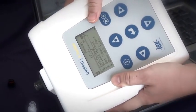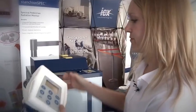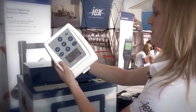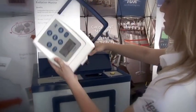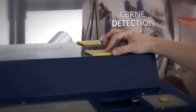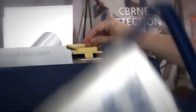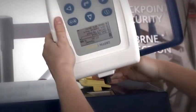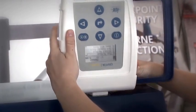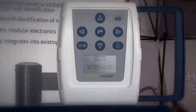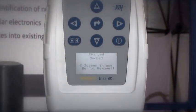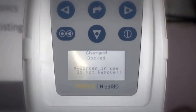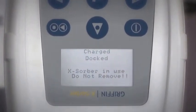Now we're going to take the Xorber over to the mobile GC MS and analyze the sample. To do that, you open the handle, open up the sampling port on the Griffin 450, and insert it. There's a triangle here, so you line up the shape with the display facing you. You can see it says charging docked. While you're working with the instrument, it does recharge the battery.